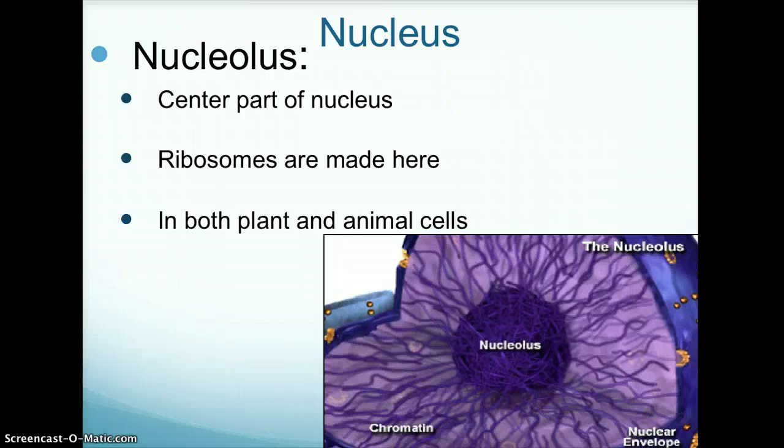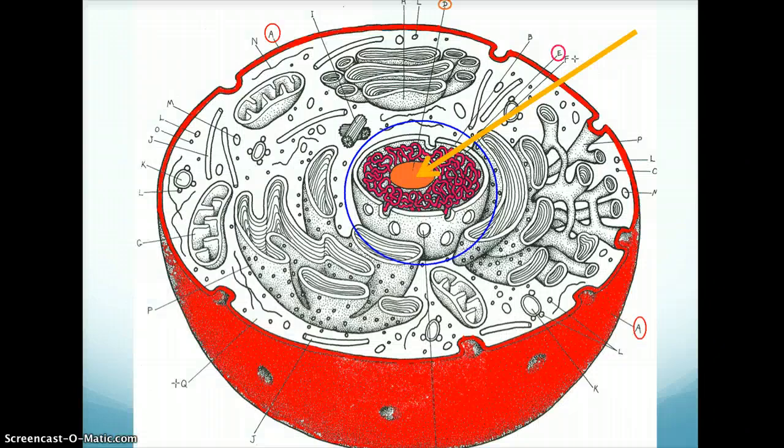The nucleolus is an organelle in both plant and animal cells. The nucleolus is the center part of the nucleus where ribosomes are made. In this animal cell, the nucleolus is colored in orange.